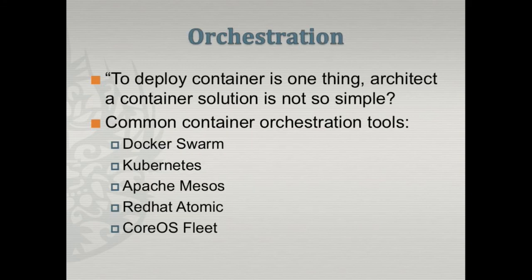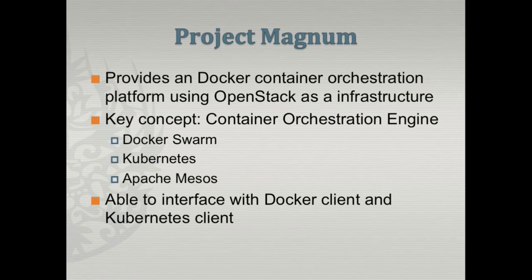The next big thing is orchestration. To deploy a single container is simple — you can do a hello-world container in a few seconds. But to architect a full container solution is not that simple, so we need an orchestration tool. These are some of the orchestration tools in the landscape. Since this is an OpenStack conference, we need to talk about how OpenStack and containers work together. You will hear about Project Magnum — the container orchestration engine that provides an interface through OpenStack so you can orchestrate an entire container system.